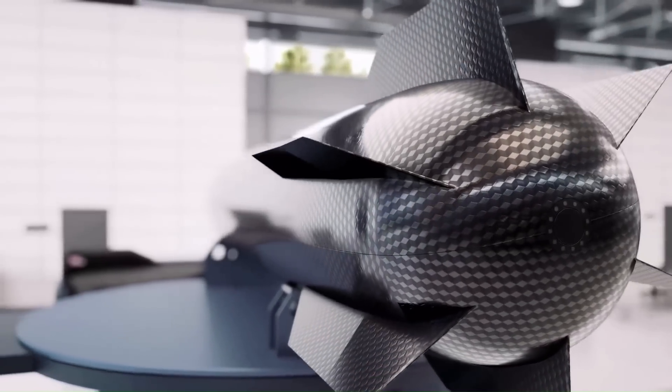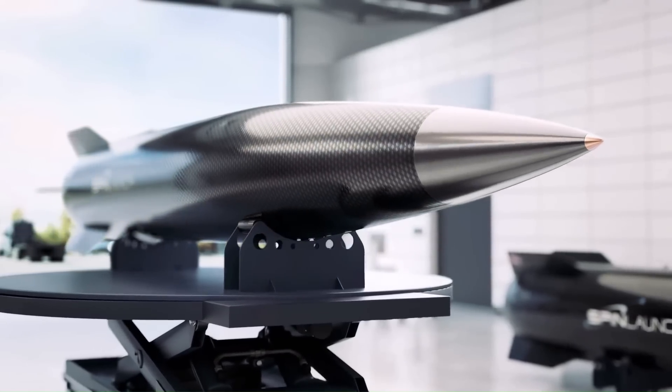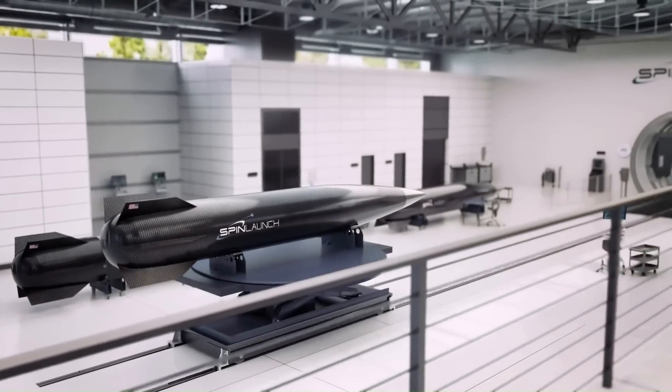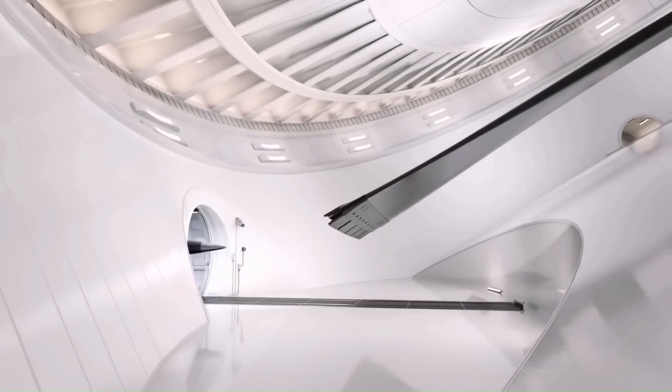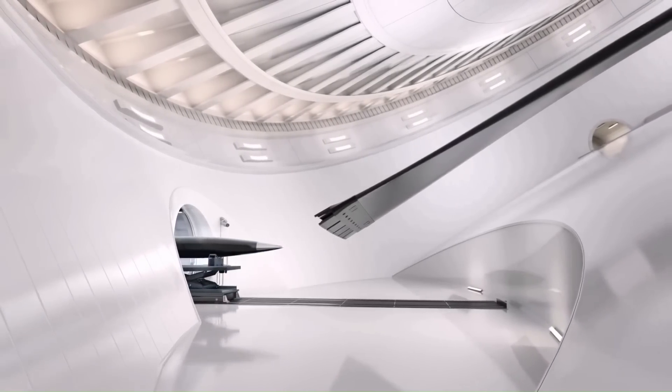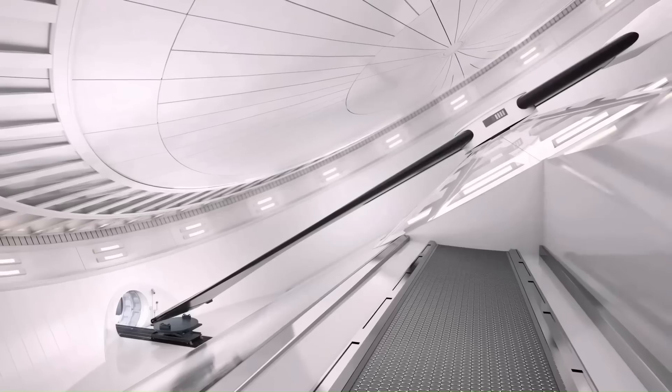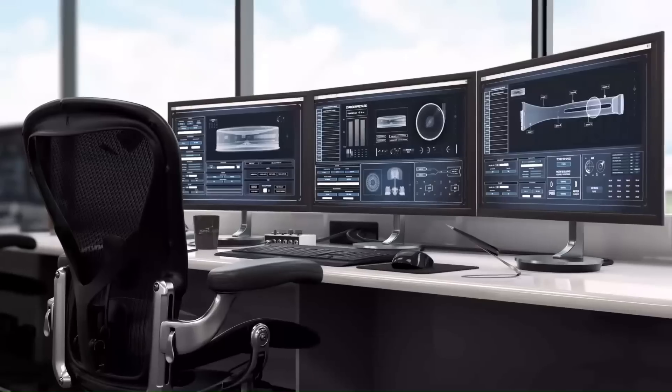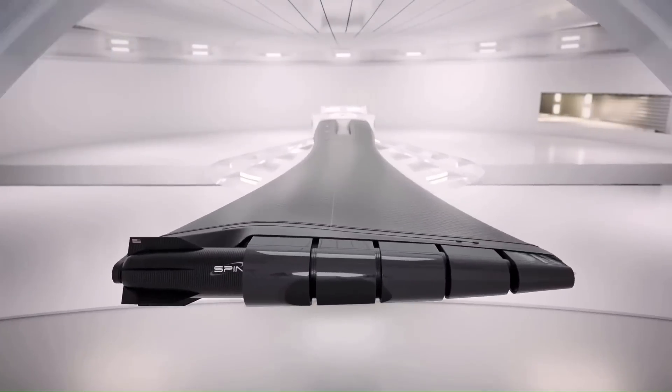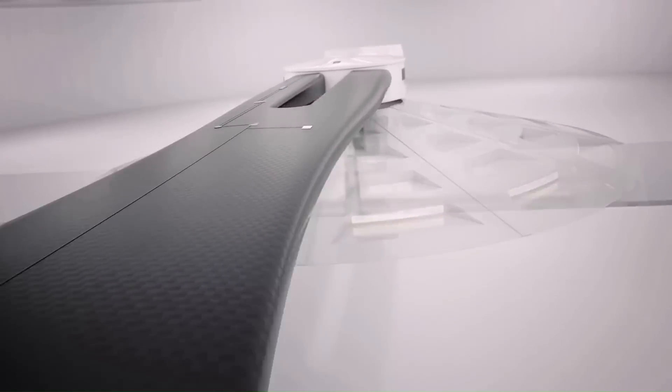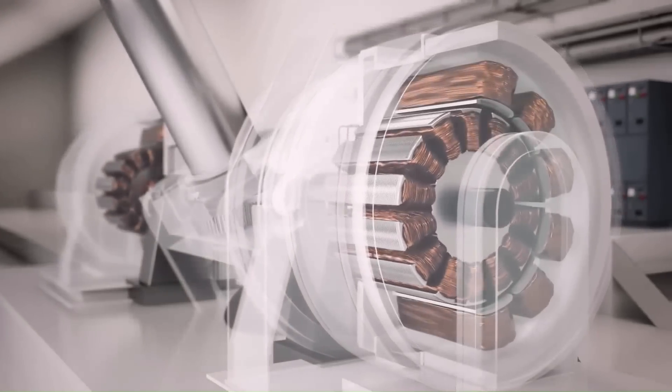The technology uses a vacuum-sealed centrifuge to spin a rocket and then hurl it to space at up to 4,660 miles per hour, 7,500 kilometers per hour. The rocket then ignites its engines at an altitude of roughly 200,000 feet, 60 kilometers, to reach orbital speed of 17,150 miles per hour with a payload of up to 200 kilograms.